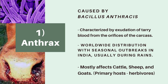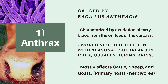Anthrax is characterized by exudation — that is, release of deep red tarry blood from the orifices of the carcass. Orifices are the external openings, for example the nostrils and the anus of the carcass, that is the dead body of the animal.